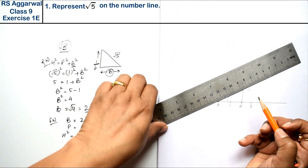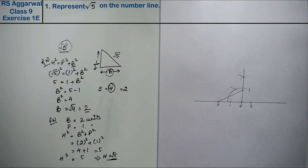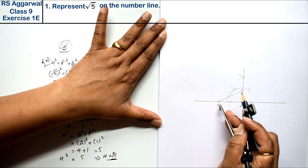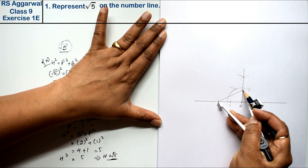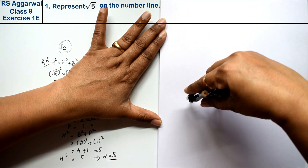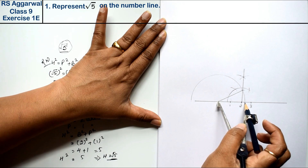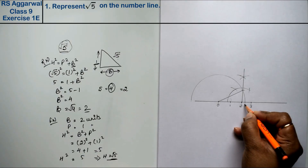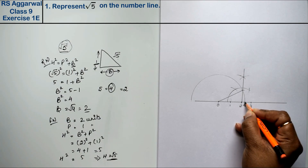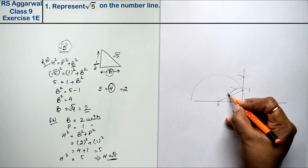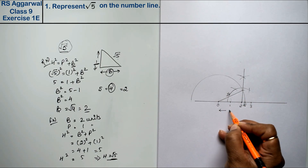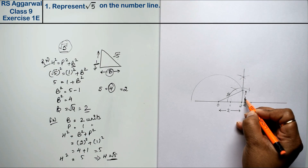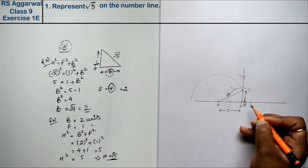This is our Pythagoras triangle. Now, from zero to the top of the perpendicular — that is one unit — we measure the hypotenuse with a compass and draw a semicircle. Where this arc meets the number line, that is our value of root 5. This is our root 5 value; this is our hypotenuse root 5. The base is 2 units, the perpendicular is 1 unit, and this point is the value of root 5.